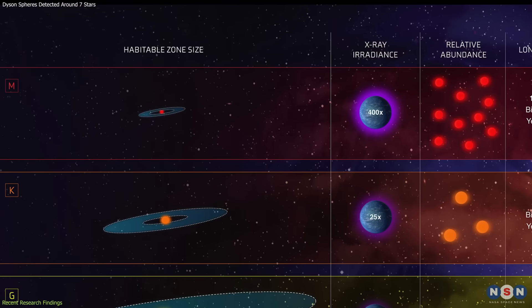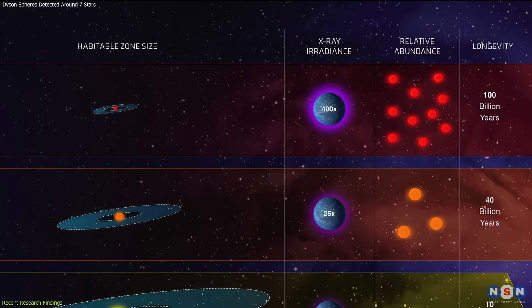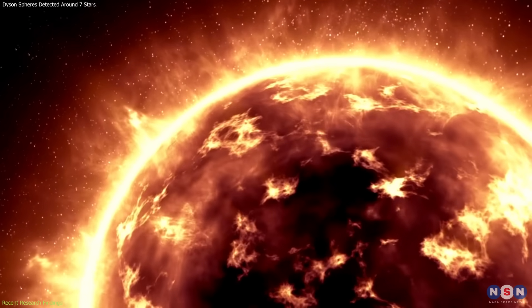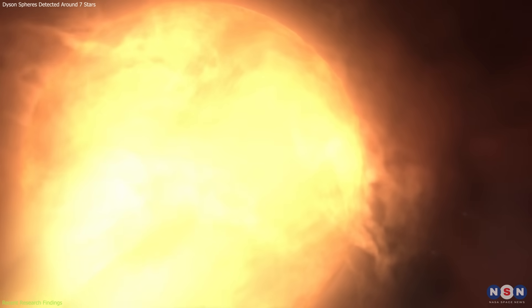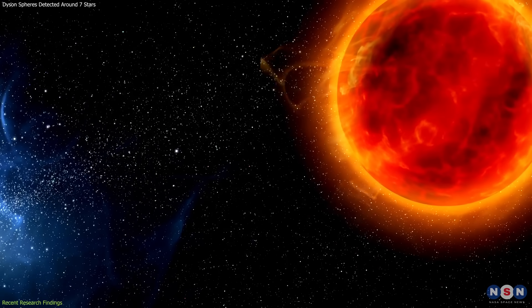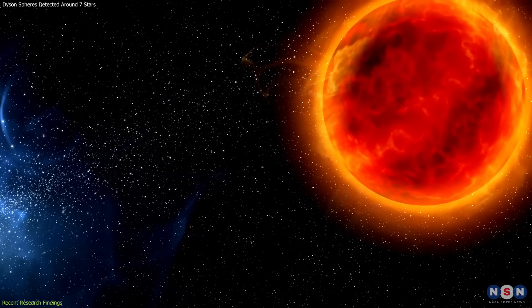These stars are all M-type, or red dwarf stars, known for their relatively low temperatures and long lifespans. Their infrared excess emissions are intriguing because red dwarfs typically do not have the warm debris disks that could naturally explain such emissions.